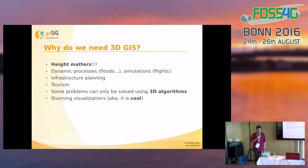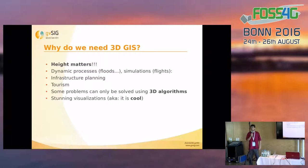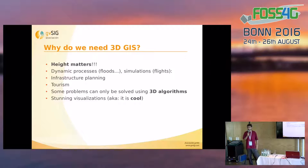Why do we need 3D engines? Because it matters and we are ignoring it most of the time, but for some things it really matters. For instance, for dynamic processes like floods or flight simulations, or for visualizing infrastructure planning — that's very useful. It can also be used for tourism to show interesting things about cities. There are also some problems that can only be solved using 3D algorithms. And finally, because people like it.